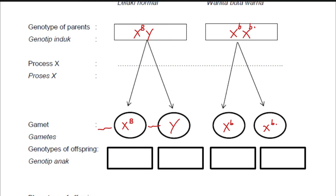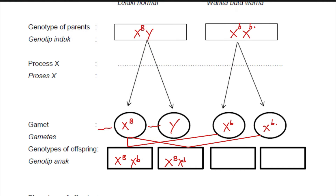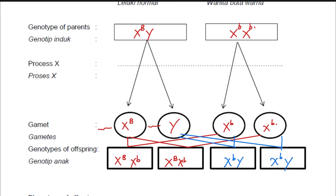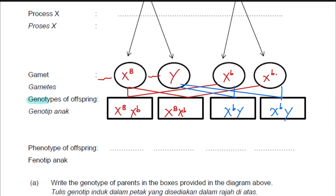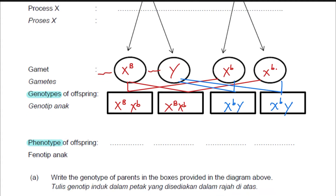Next, fertilization. The X^B sperm can fertilize the ovum to give X^B X^b, and the Y sperm will fertilize the ovum to give X^b Y. Always write the X before the Y. So for phenotype: X^B X^b is a carrier female, and X^b Y is a colorblind male.